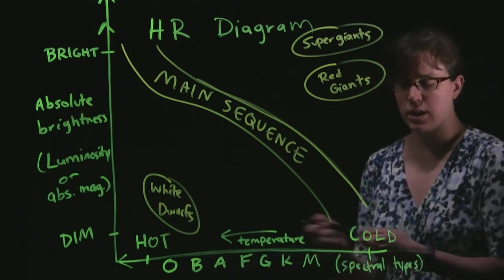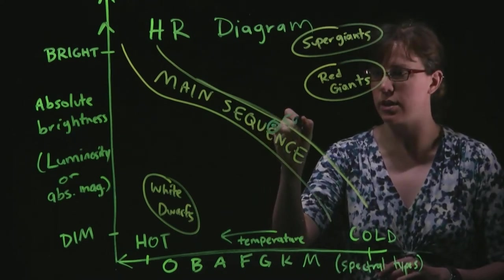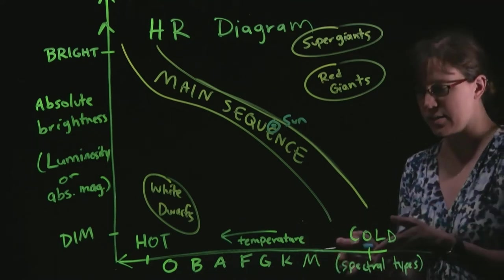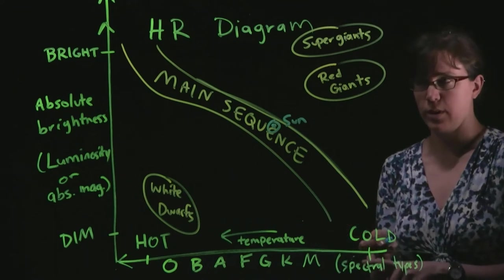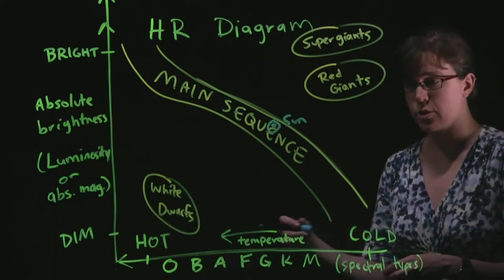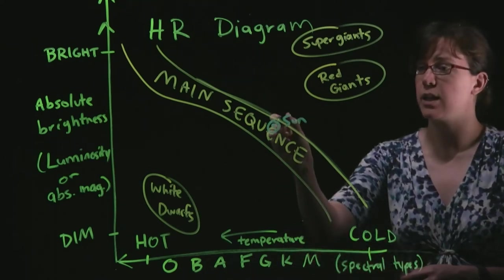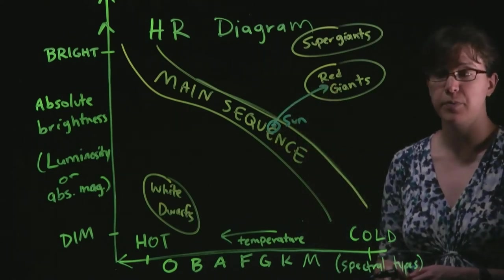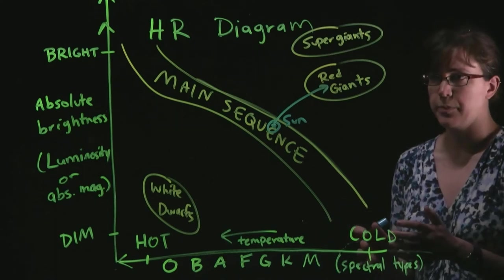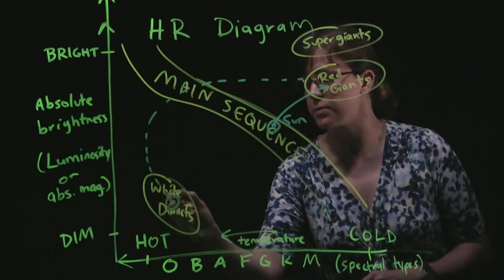I'm going to start with the Sun and how it evolves through this diagram. The Sun is a G star, so it sits about here on the main sequence. It's going to spend 90% of its life there — almost 10 billion years — sitting stably at a particular temperature, luminosity, and radius. But once the Sun runs out of hydrogen in its core to turn into helium, it will puff up its outer layers and become a red giant. The Sun will leave the main sequence, become a red giant, and that will be a short stage of its lifetime.